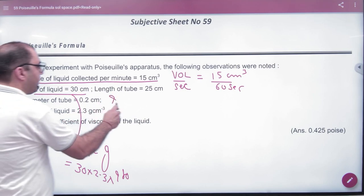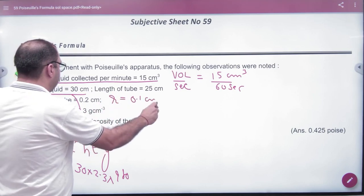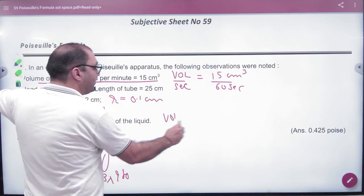The diameter of the tube, R is equal to 0.1 cm. You have to take H. So we have to take Poiseuille's formula.